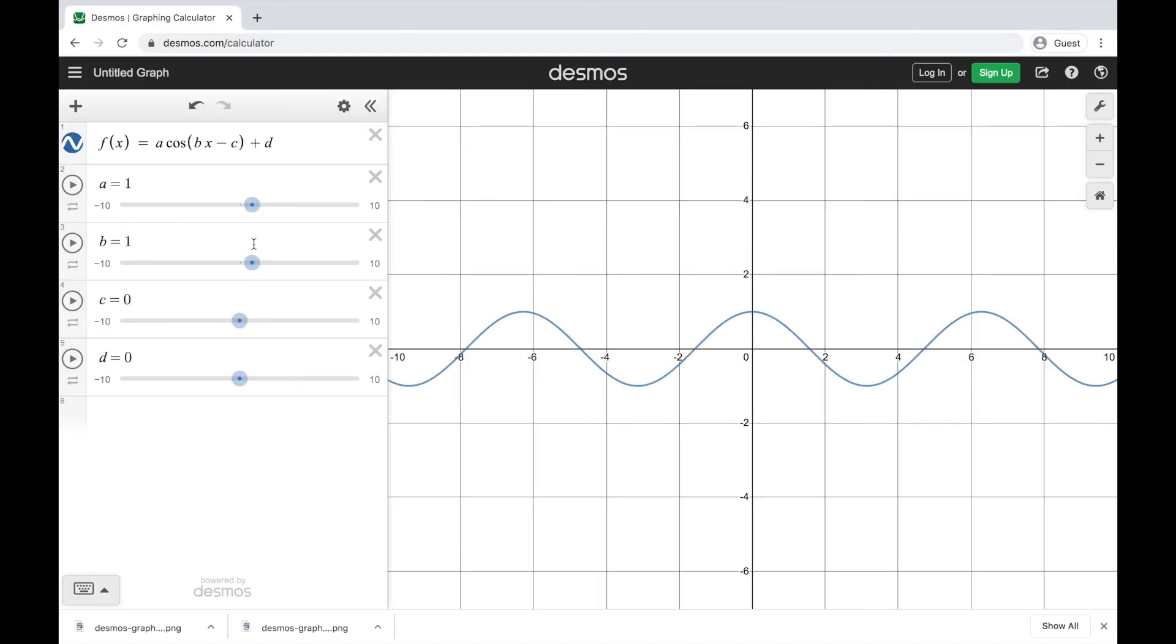Here is my standard graph of cosine. Just like before, if I change the value of a, the number I multiply by, it changes the height. And making it negative will flip it along the x-axis. So multiplying the entire function by a number will change the height of my waves.